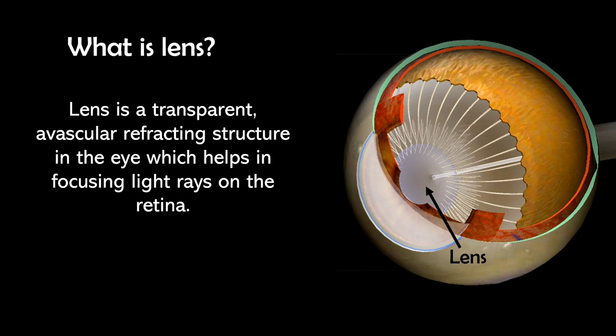What is the power of lens? The answer is lens contributes about one-third to the total power of eye, which is about 15 to 17 diopters.